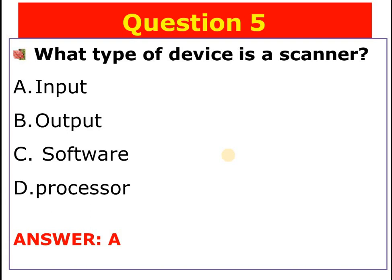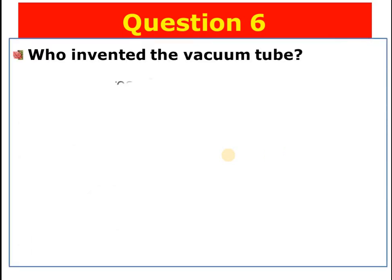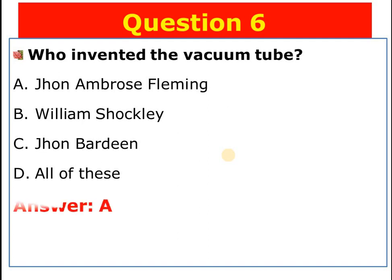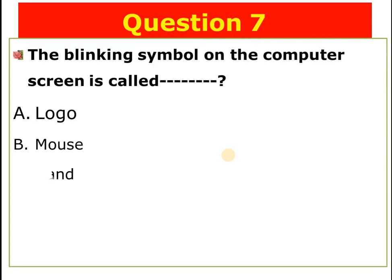Question number six: Who invented the vacuum tube? A) John Ambrose Fleming, B) William Shockley, C) John Bardeen, D) All of the above. The answer is A — John Ambrose Fleming invented the vacuum tube.